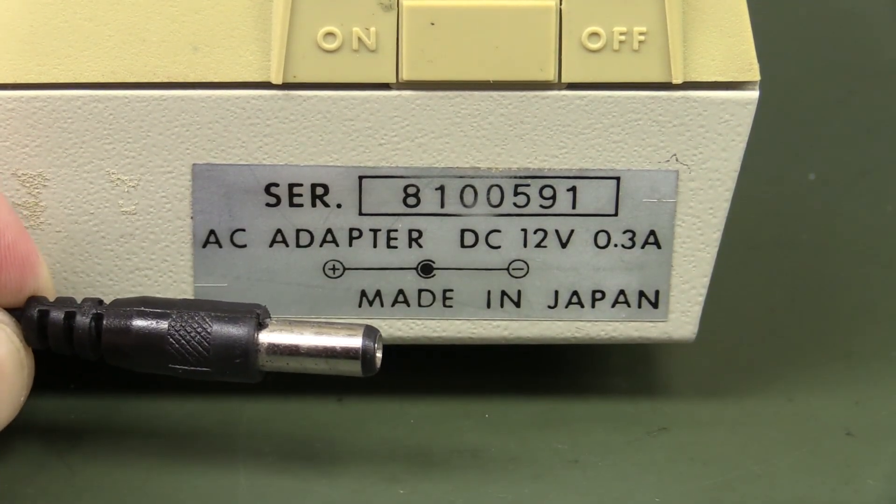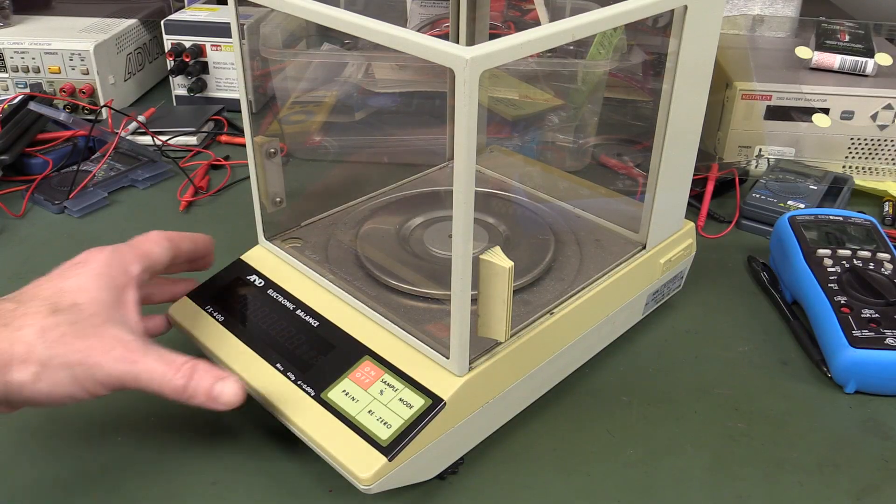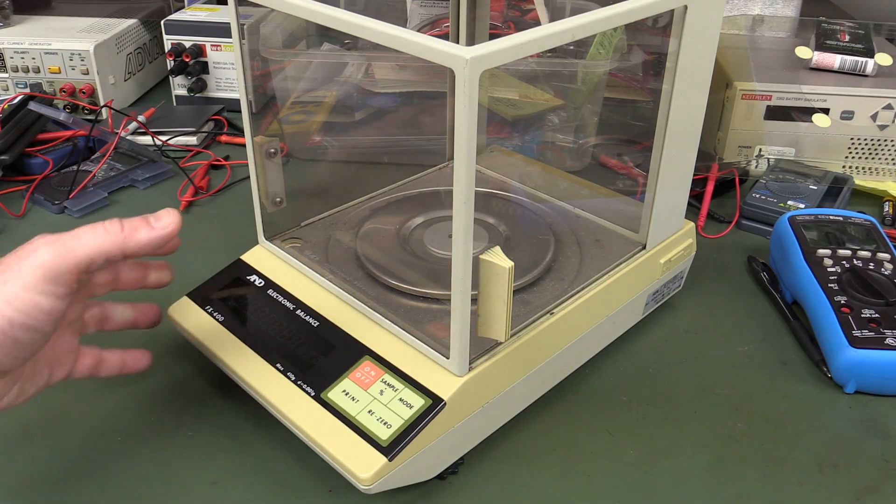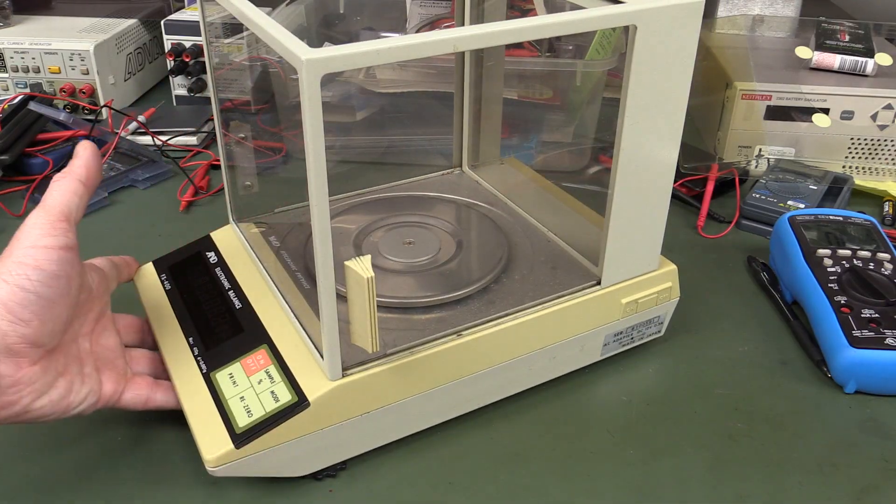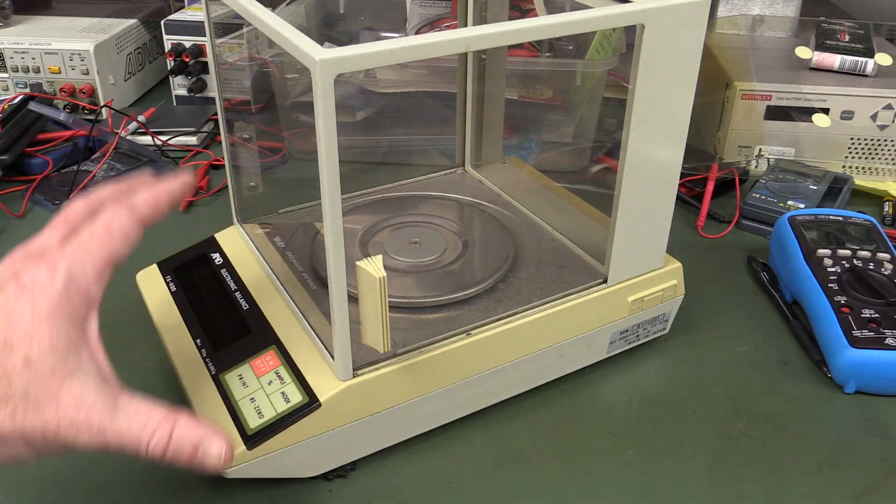Let's take a quick look at it. Now the product I'm actually looking at here is an A&D or AND electronic balance, analytical balance. It's one of these laboratory ones, 400 gram maximum.